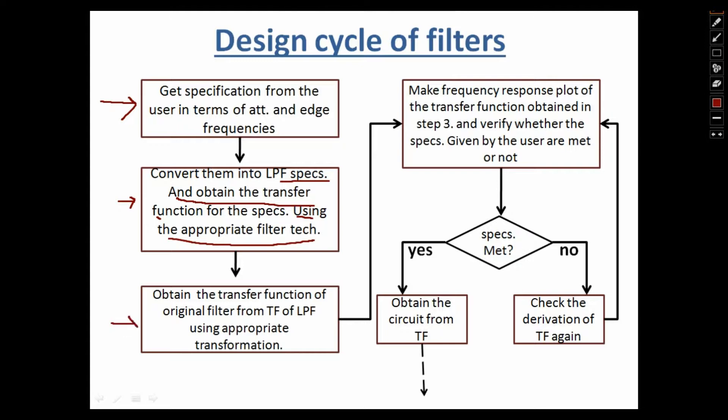The third step is to obtain the transfer function of the original filter from the transfer function of the low pass filter using an appropriate transformation. In the second step, we obtained the transfer function of the low pass filter. For example, if the user wants you to design a band pass filter, you will first convert the specification of the band pass filter into the specification of the low pass filter, find the transfer function of the low pass filter, then transform it into the band pass filter transfer function using the appropriate transformation.